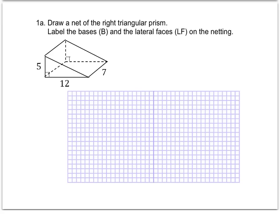Now let's get started on the actual note sheet. We're going to go through some steps to show how the formula for the surface area of a prism is derived. We're first asked to draw a net of this triangular prism — a net is what you get when you unfold the solid and flatten it out — and then label the bases and the lateral faces.